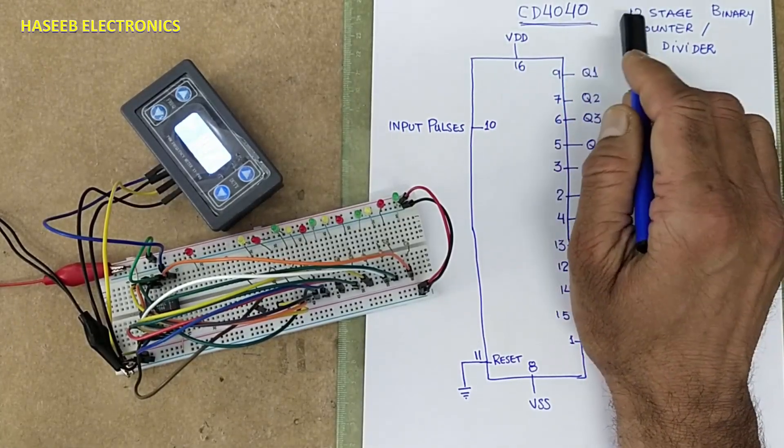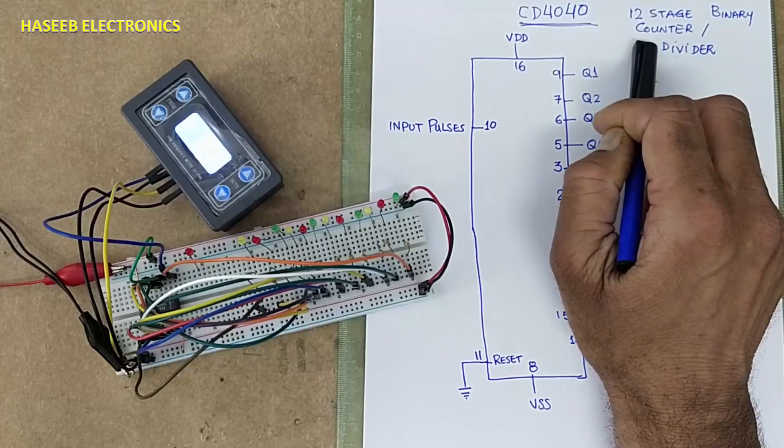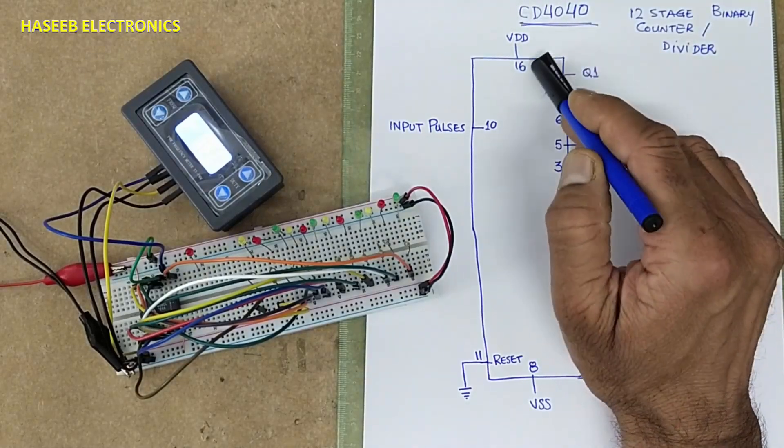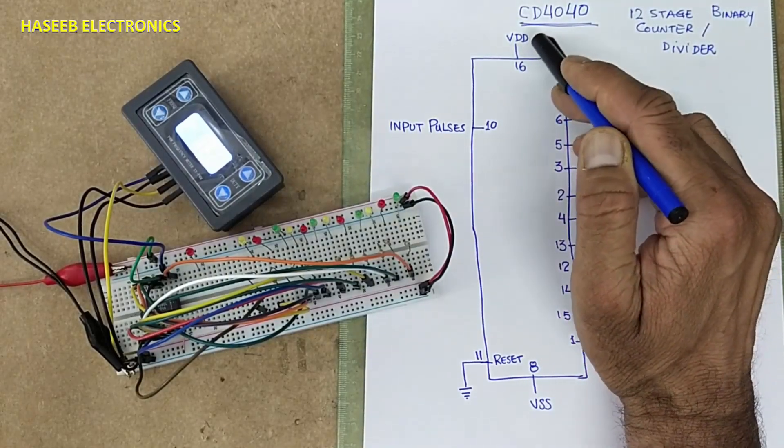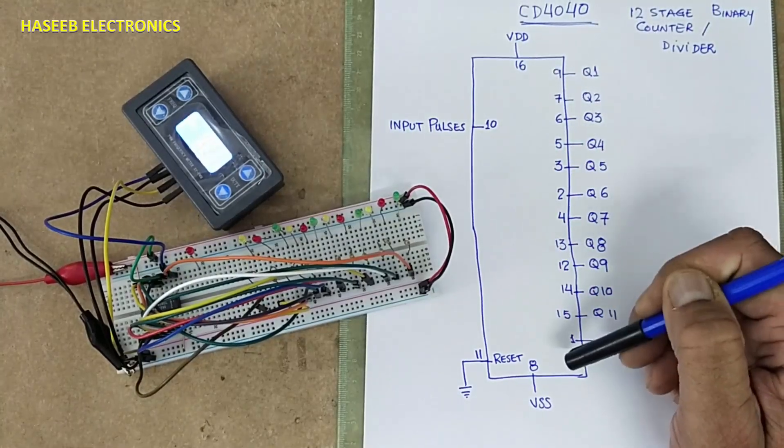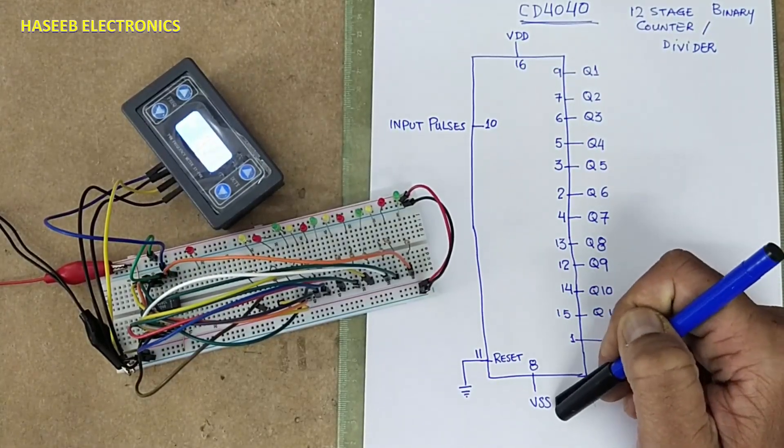CD4040 12 stage binary counter CMOS IC. Pin number 16 VDD 3V to 15V. Pin number 8 VSS.